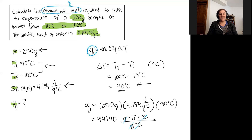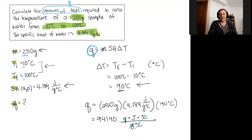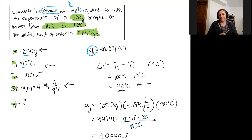Now I need to determine the correct significant figures. I have one sig fig for both temperature values and two for my mass. The specific heat is a defined physical property of water. Reporting to one significant figure, the final answer is 90,000 joules.